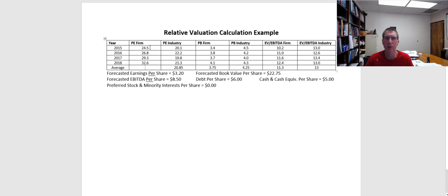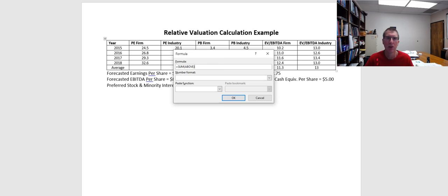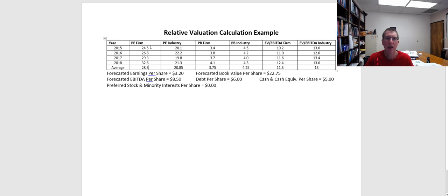So if we look, our PE has been 24.5 in 2015, 26.8 in 2016, 29.3 in 2017, and 32.6 in 2018. We're going to take an average of those. You can use an average formula in Excel — you can see here's the formula bar. We just need to set this to average, and that tells us the average for these four separate multiples is 28.3. We've already filled those in for the rest of that table.